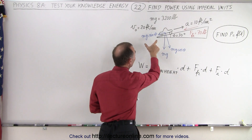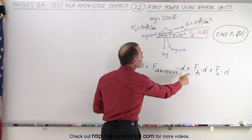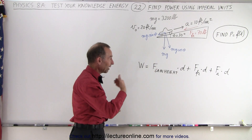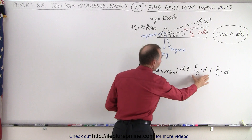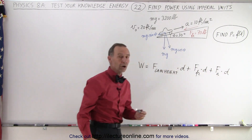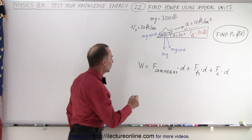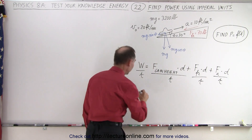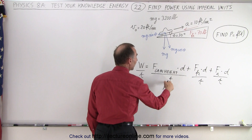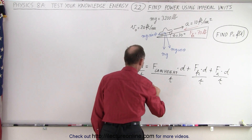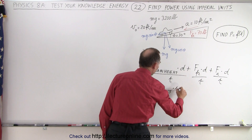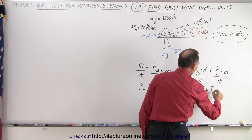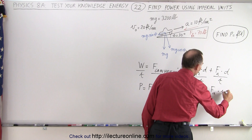We have to push against mg·sinθ to gain height, we have to do work to overcome friction, and we have to do work to make the car accelerate. The definition of work is force times distance, so it's the work to gain height, plus the work to overcome friction, plus the work to make the car accelerate. Then we divide everything by time: work divided by time equals power, and distance divided by time equals velocity. So power equals the force to gain height times velocity, plus the force of friction times velocity, plus the force to accelerate times velocity.